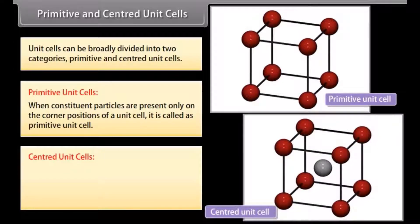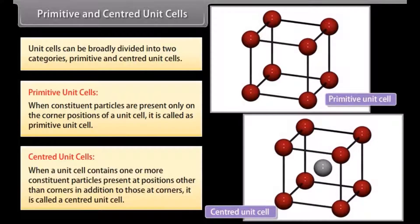B. Centered unit cells: when a unit cell contains one or more constituent particles present at positions other than corners in addition to those at corners, it is called a centered unit cell.